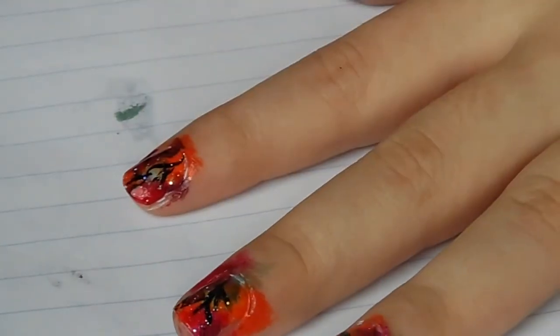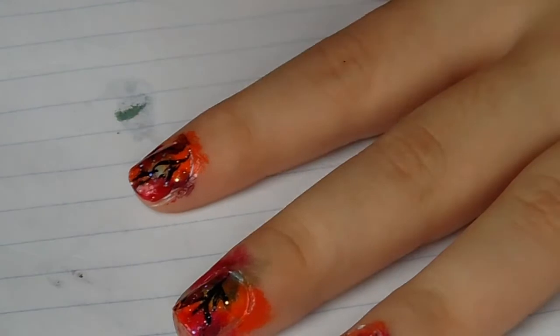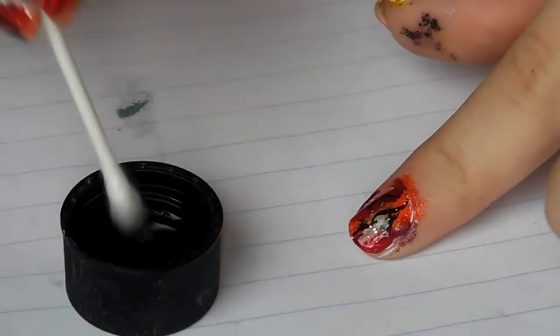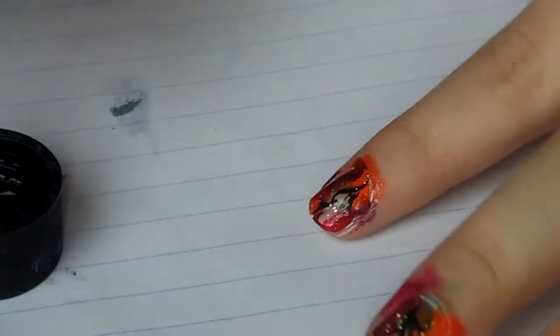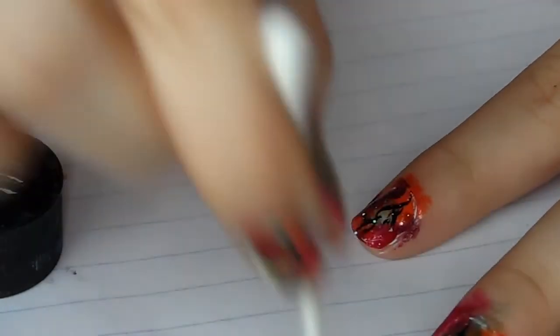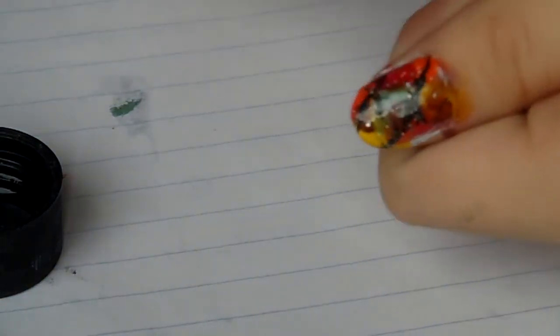We have the glitter done. I'm going in with a Q-tip and some nail polish remover. I'm going to dip the Q-tip into the nail polish remover, dab it off, and clean around the edges of the nail.